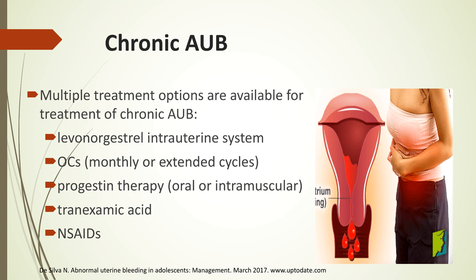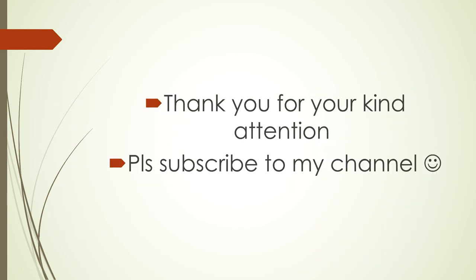For the treatment options for chronic abnormal uterine bleeding, we can offer the levonorgestrel intrauterine system, oral contraceptives in multi or extended cycles, progestogen or progestin therapy either oral or intramuscular, tranexamic acid, and NSAIDs. Thank you for listening to this lecture and please don't forget to subscribe.